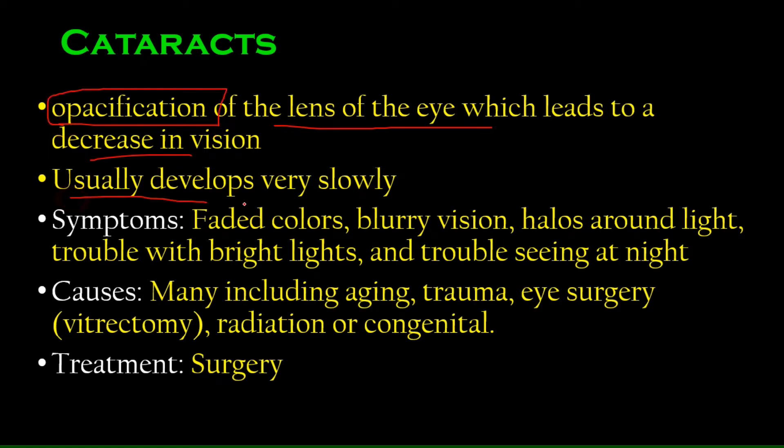So cataracts is basically the opacification of the lens which leads to a decrease in vision. It usually develops very, very slowly and most of the time people don't even notice. Symptoms include faded colors. If something is very bright, it may appear dull. Blurry vision because if there's something wrong with the lens, it won't focus vision properly.